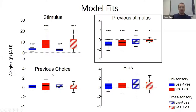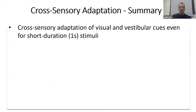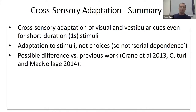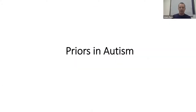The previous choice did not have a significant effect in this experiment. Our conclusion is that we have cross-sensory sensory adaptation — like the waterfall effect but going across senses. Importantly, this occurs even for short-duration stimuli; some prior studies suggested long adaptation periods were needed for cross-sensory effects. Any questions on cross-sensory adaptation before I move on to presenting some autism data?